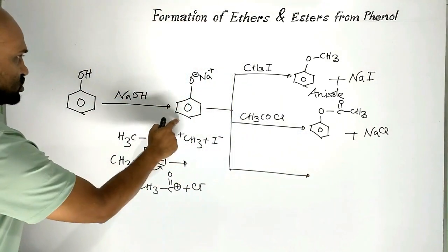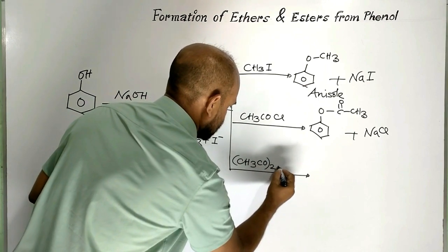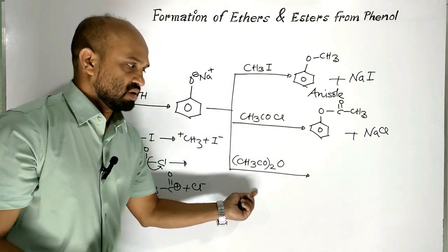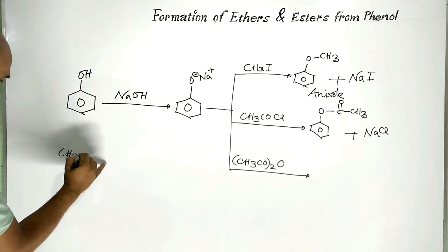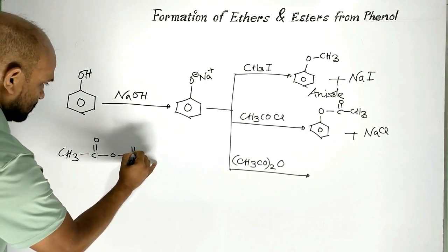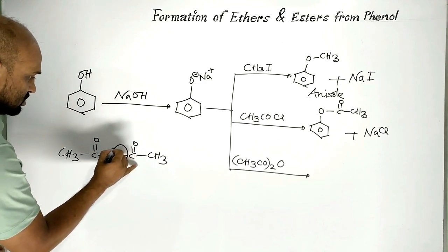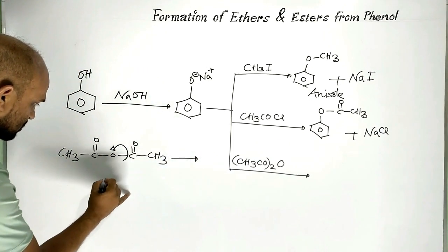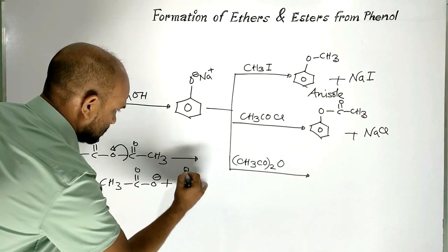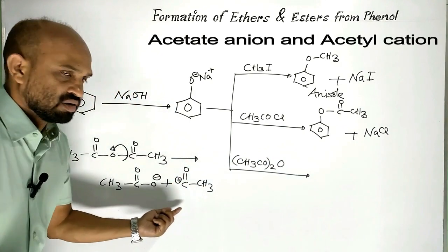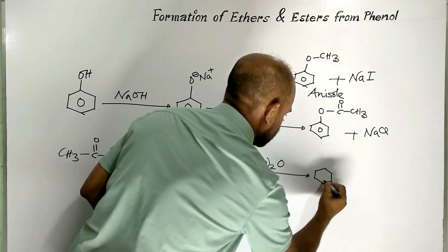Moreover, when sodium phenoxide is treated with acetic anhydride — this is acetic anhydride — one bond undergoes heterolytic fission. As a result, an acylium cation and an acetate anion are formed. The cation combines with oxygen to form the ester.